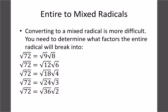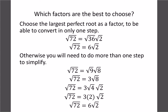Our goal today is to figure out how to simplify entire radicals into mixed radicals. The first step is to figure out what factors the radicand breaks into. Let's just look at regular numbers first without variables. For √72, possible factor pairs include 9×8, 12×6, 18×4, 24×3, and 36×2 — five different options. Some will work more easily than others, and one approach is best.